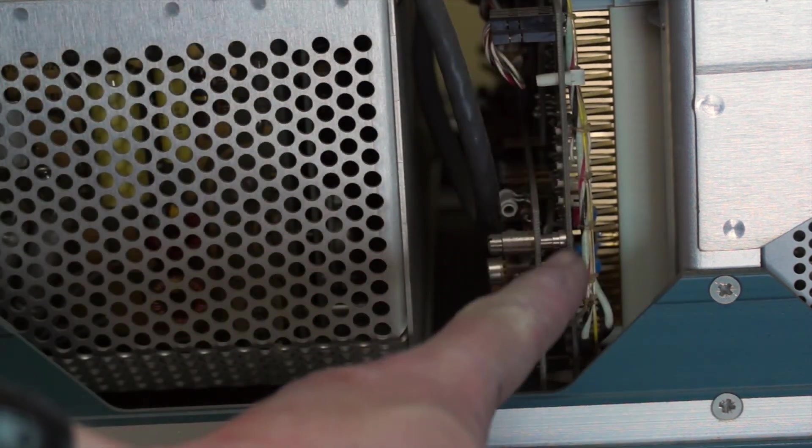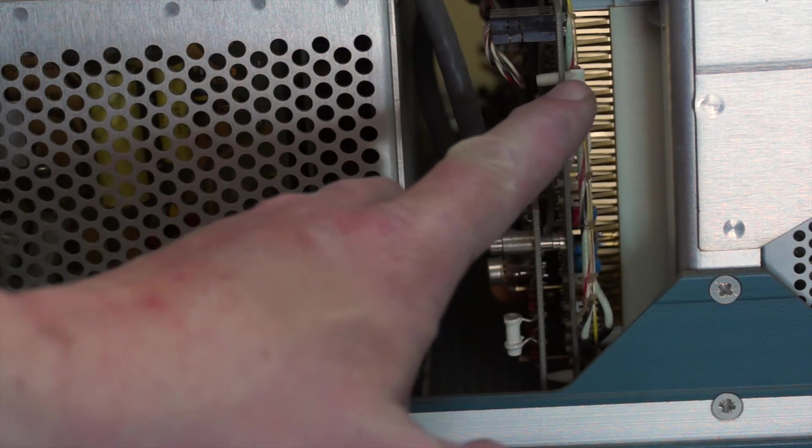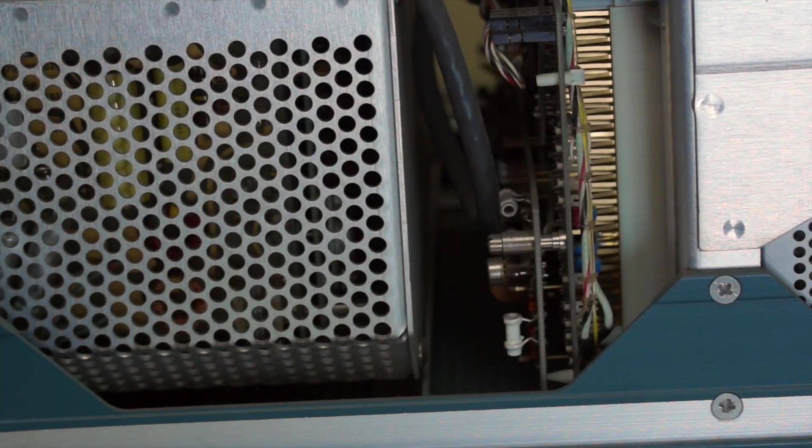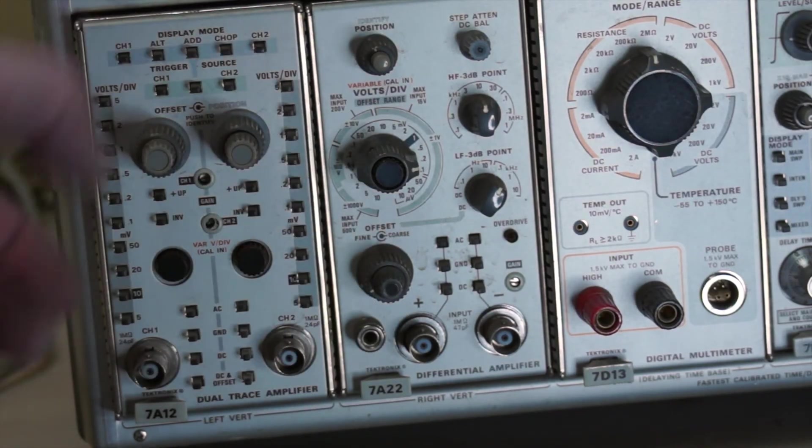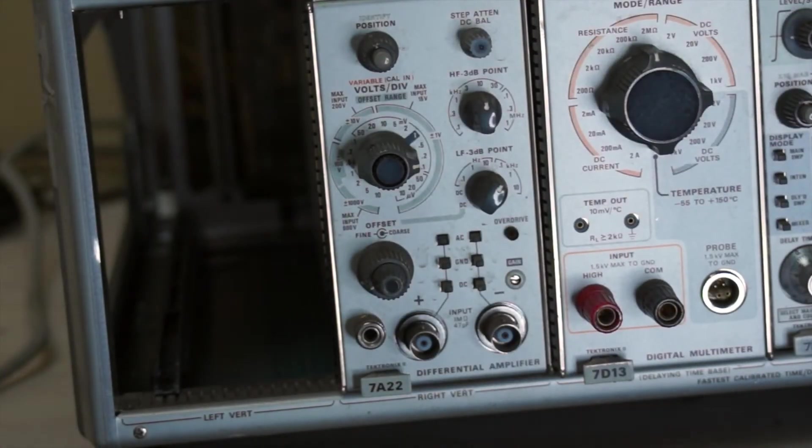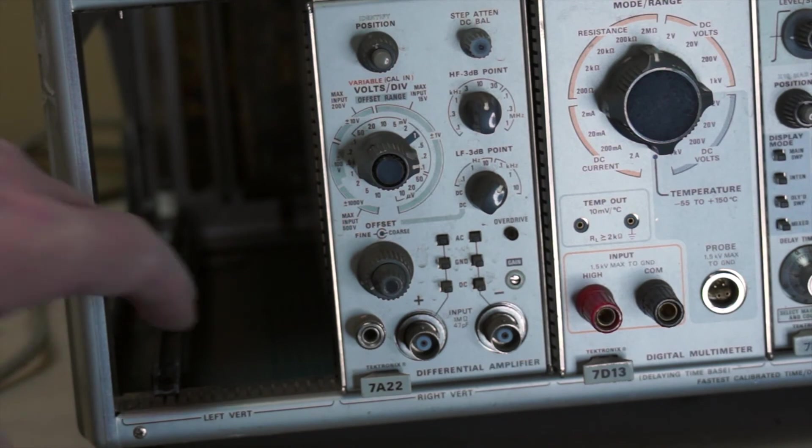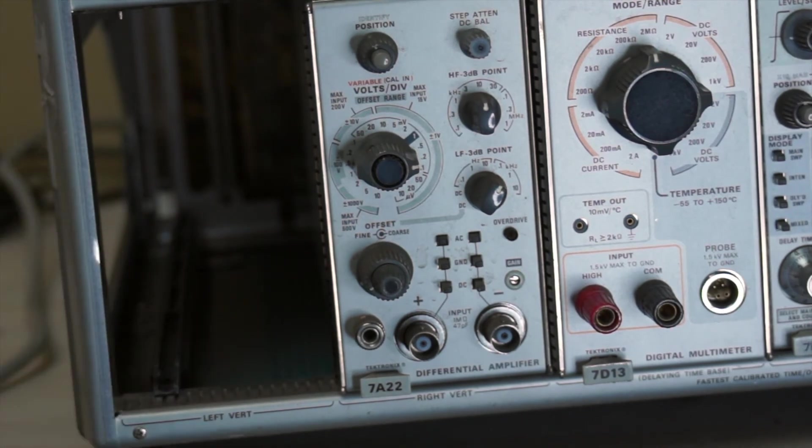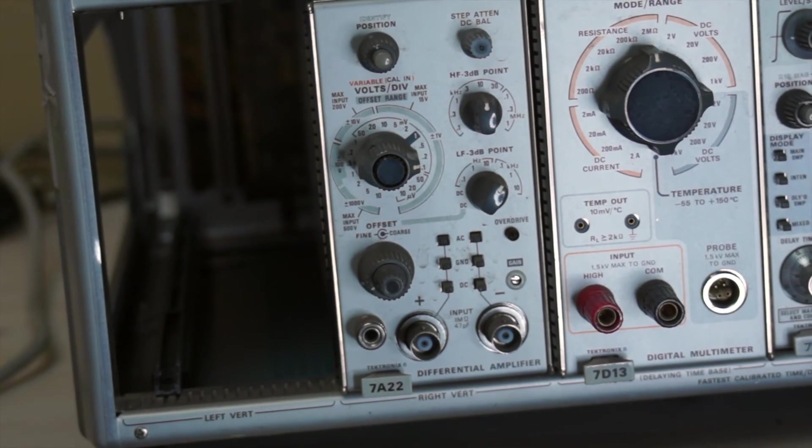This board here is the backplane board. It is mostly interconnects into the card cage. Let's take a little look at the card cage now. Each of the modules can be removed from the mainframe. There you go, there's one of the modules. Inside at the very back there's a connector. I'll try to get a shot of that connector.